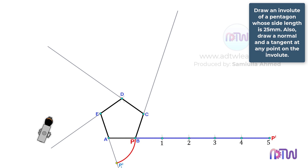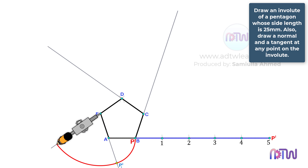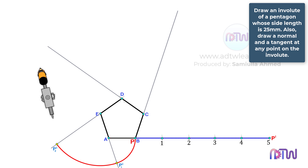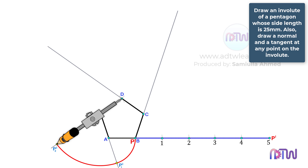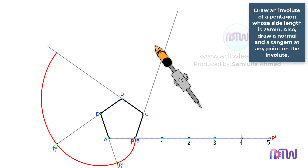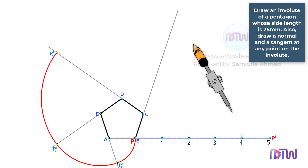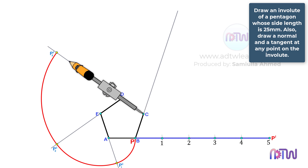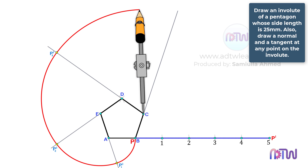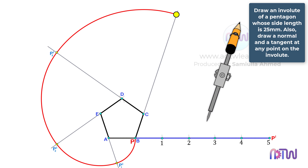Next, adjust the compass to the length between points E and P1-, and using point E as a center, draw an arc from point P1- to this line. Label this point as P2-. Next, adjust it to the length between points D and P2-, and using point D as a center, draw an arc from point P2- to this line. Label this point as P3-. Next, adjust it to the length between points C and P2-, and using point C as a center, draw an arc from point P3- to this line. Label this point as P4-.